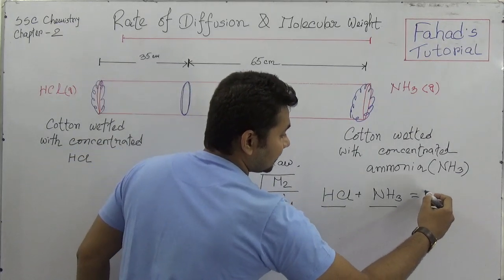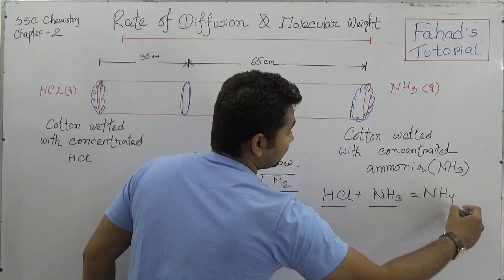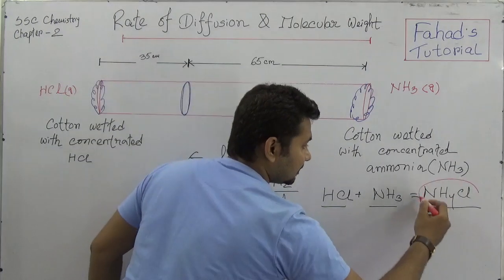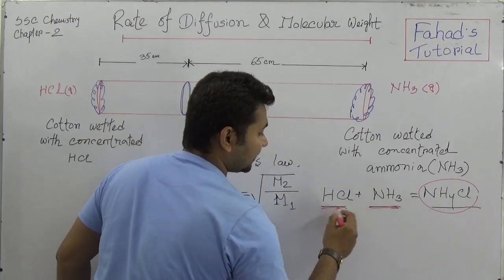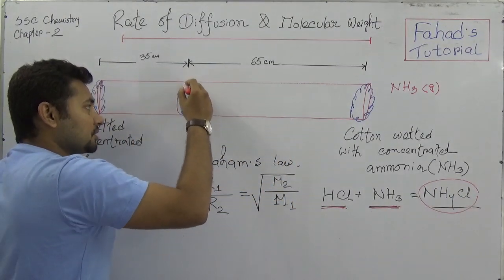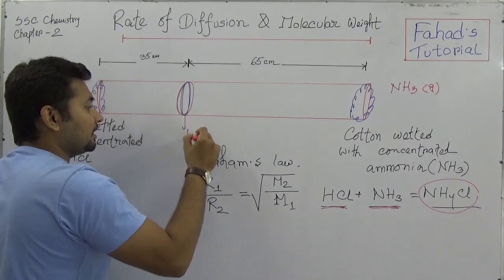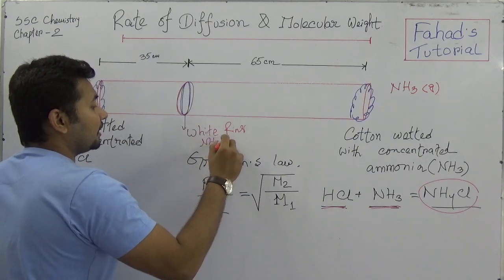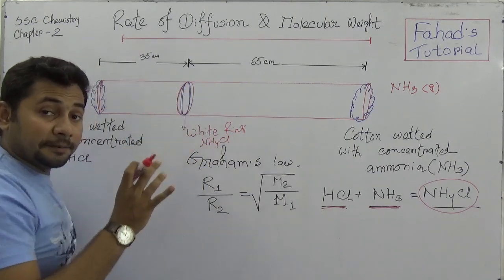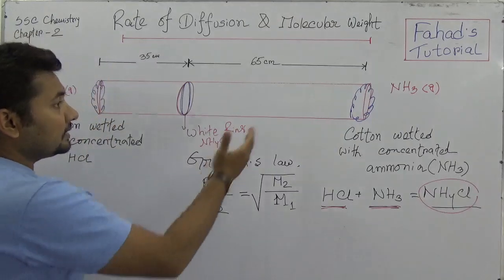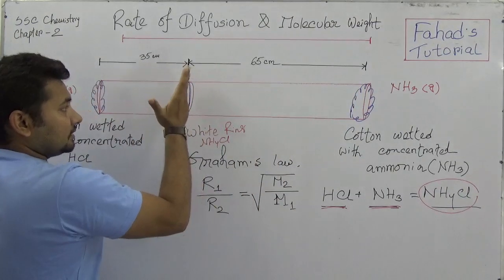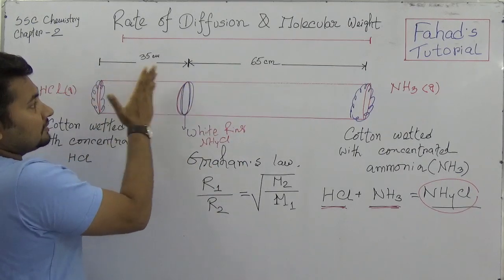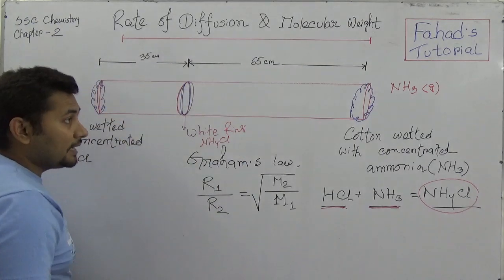We know that when HCl and ammonia react with each other, they produce ammonium chloride (NH4Cl). So ammonium chloride will be the product of this reaction between ammonia and HCl, and there will be a white ring of ammonium chloride visible inside the tube.